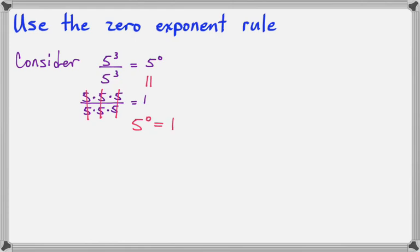In fact, there's nothing special about the 5. We could do this with any base. So any base to the 0 power equals 1. And that's what the zero exponent rule says. Any time we have an expression like this, it can be simplified to simply 1.